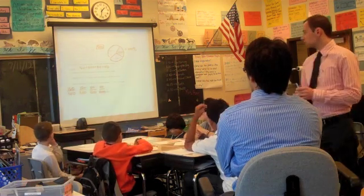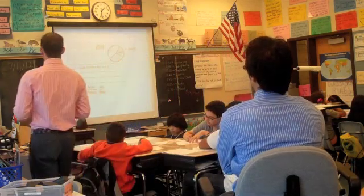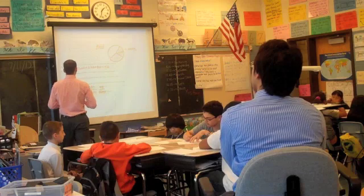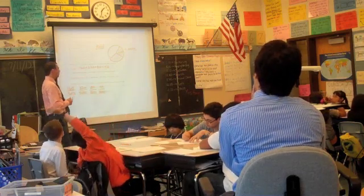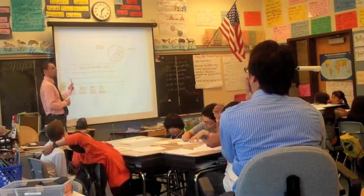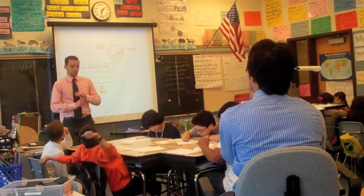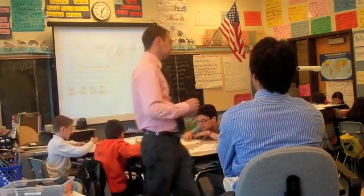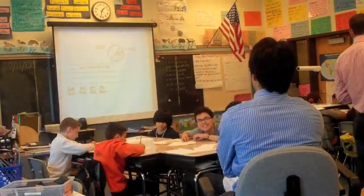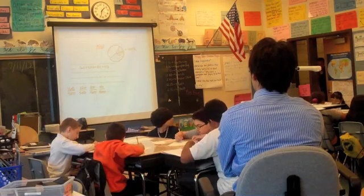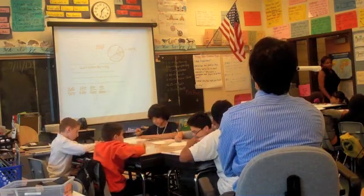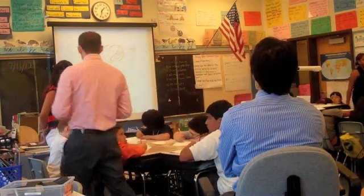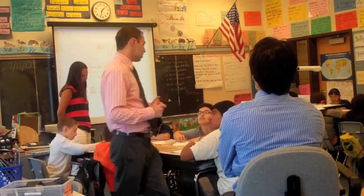So just looking at these fractions on the screen, are these reduced to their lowest terms? No. Exactly. So what are we going to do? Are we going to convert these right away into a decimal or are we going to reduce them? Reduce them. Excellent. So take the next minute and reduce these fractions to their lowest terms. Once you've reduced them, raise your hand. We'll check them. And if you're right, we'll award you five dollars each fraction.